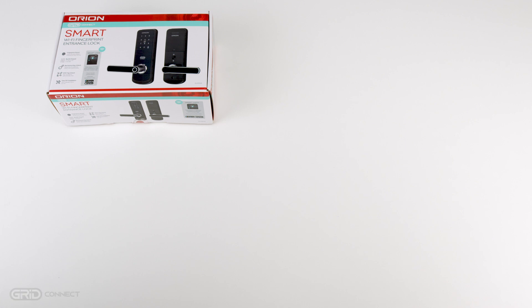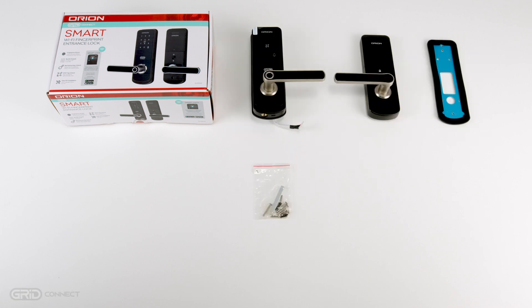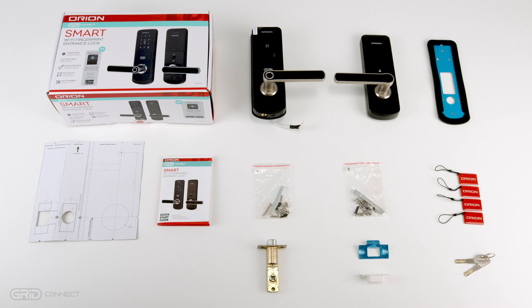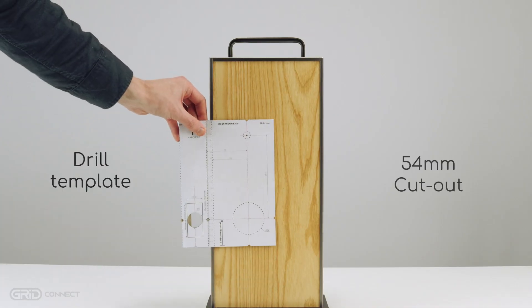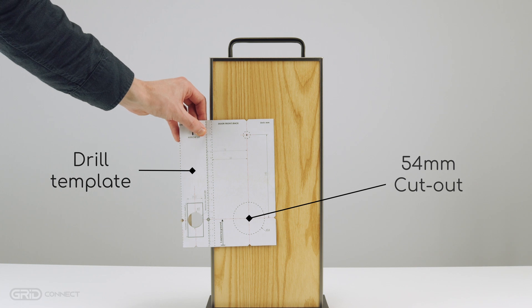Start by unboxing your new Orion Smart Lock. Make sure your door meets the minimum requirements. Your door should have a standard 54mm cutout as well as a 60 or 70mm backset.